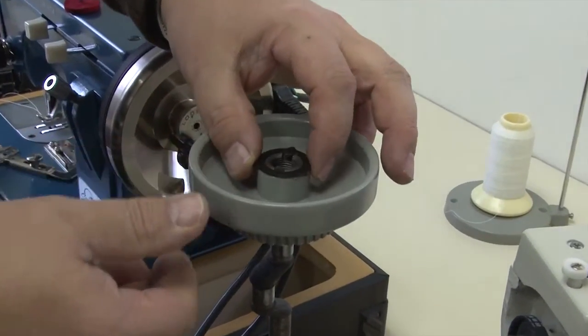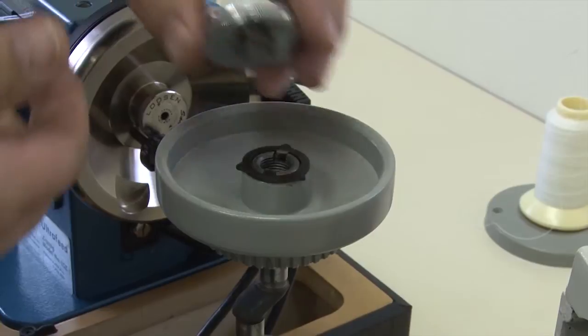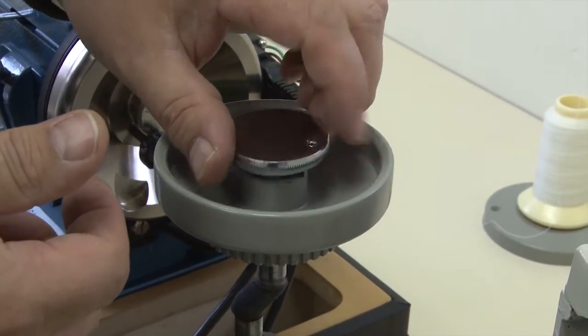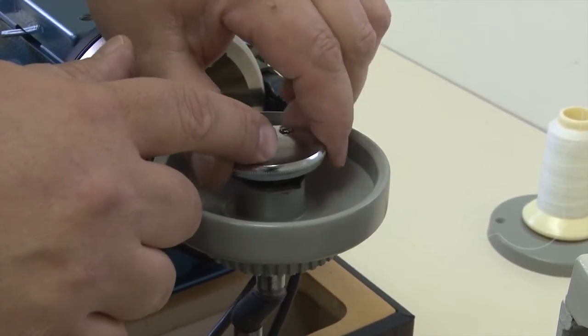We're going to put the clutch washer on exactly in that same location so we can make sure that we apply tons of pressure with the clutch knob when we screw it down hard.